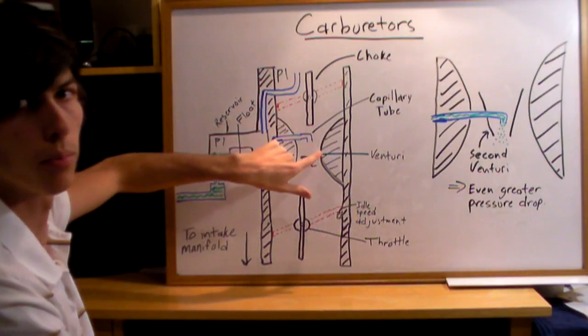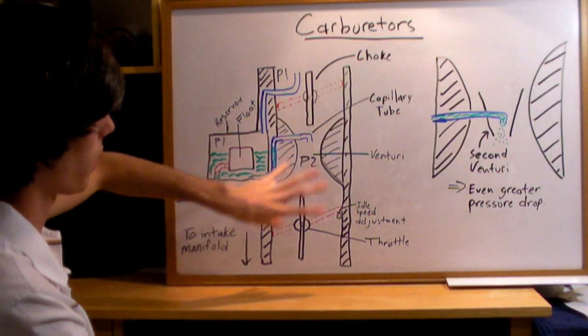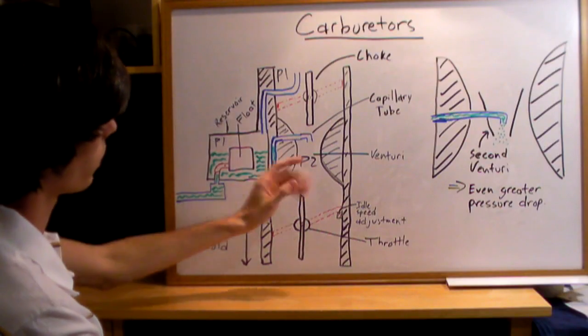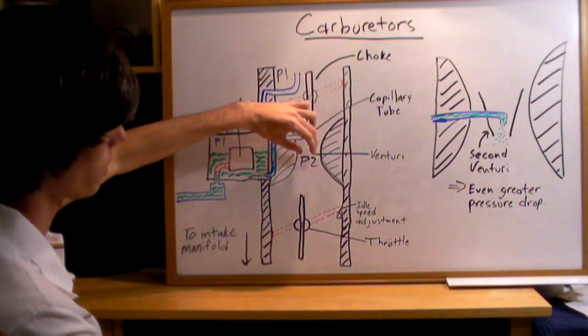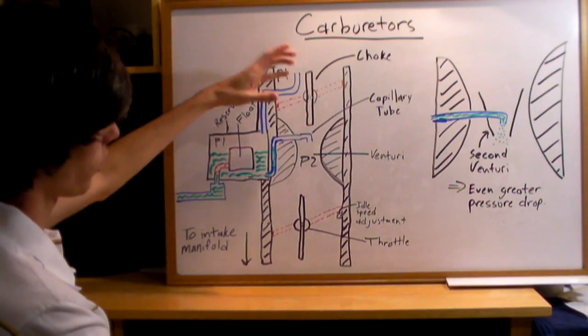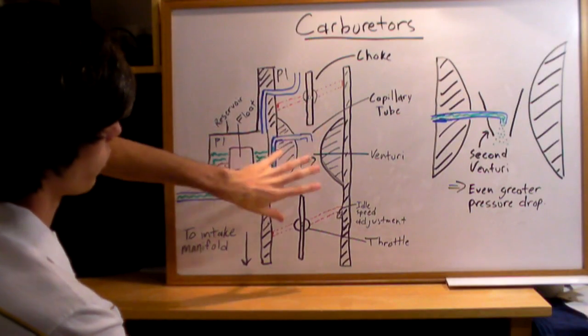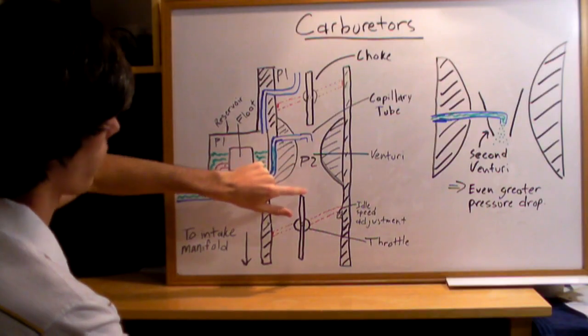This is going to be a very small tube, so just tiny little droplets are going to come out. Depending on how much throttle you have, more air will be flowing and the pressure will decrease even more, or less air will be flowing, so you'll have a differing amount of fuel coming out.